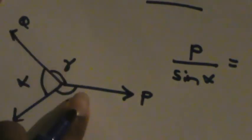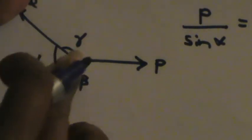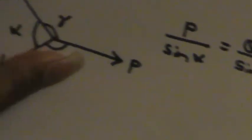We can say P divided by the sine value of the angle facing P — sine alpha — is equal to Q divided by the sine value of the angle facing Q — sine beta — is equal to R divided by the sine value of the angle facing R — sine gamma. So given any two forces and the three angles, or any angles and two forces, you can find the other force. This is a very important theorem.